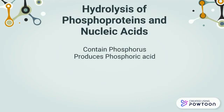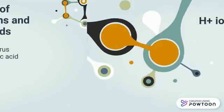During hydrolysis of phosphoproteins and nucleic acids, the phosphorus contained within these molecules produces phosphoric acid, which ionizes to release hydrogen ions.